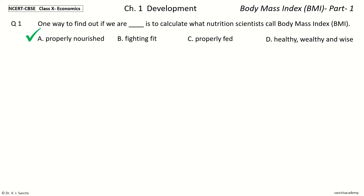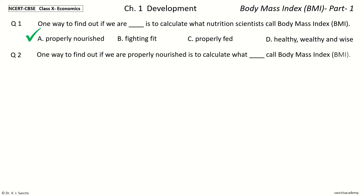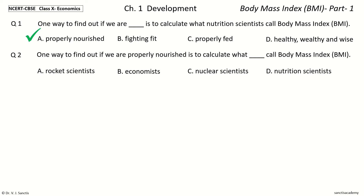Question 2: One way to find out if we are properly nourished is to calculate what dash call Body Mass Index BMI. The options are: rocket scientists, economists, nuclear scientists, nutrition scientists. And the answer is nutrition scientists.